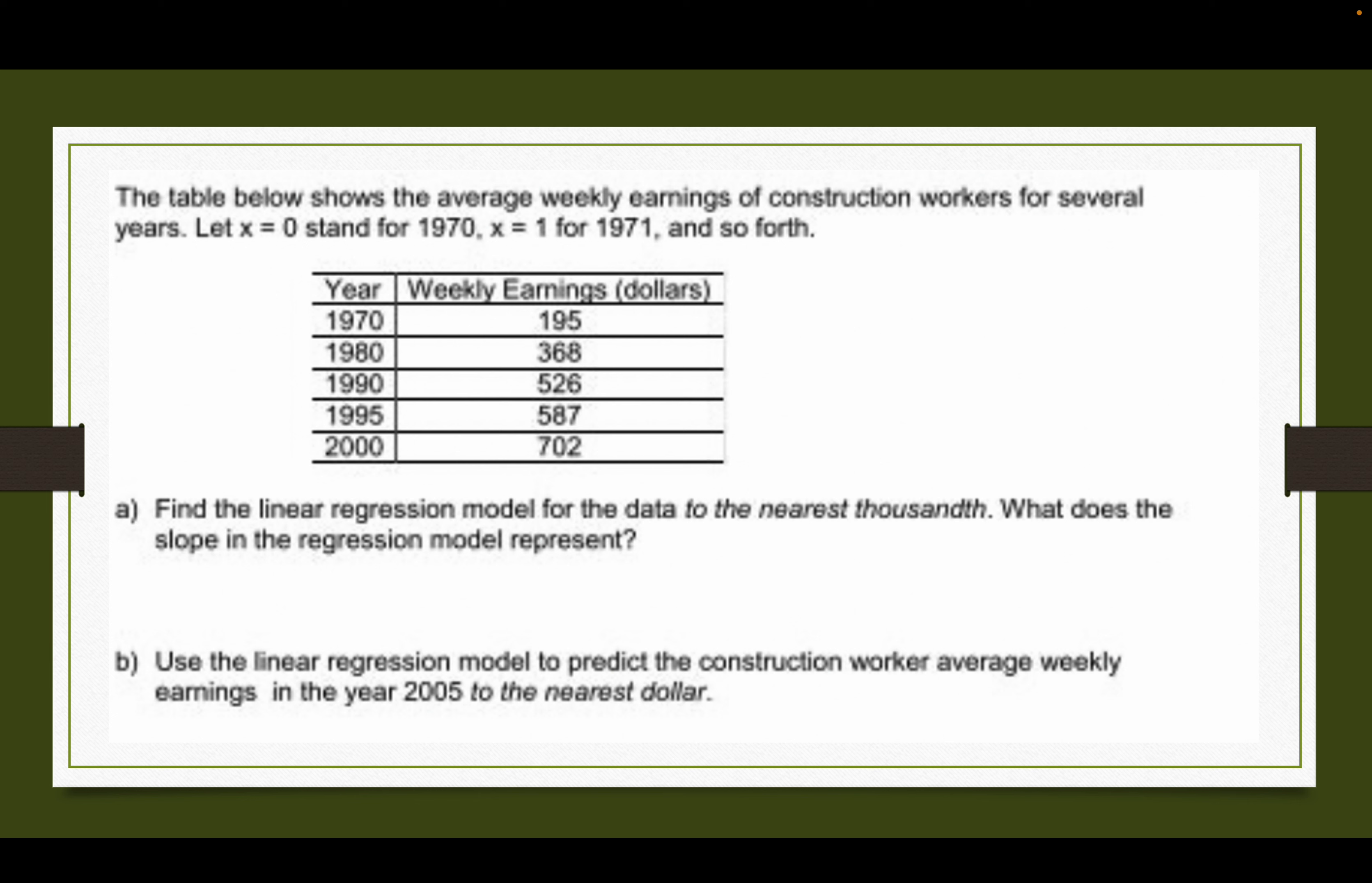All right, I plug in 1970, 1980, 1990, 1995, and 2000 into L1. 195, 368, 526, 587, 702 into L2. Then I do STAT CALC, I go to the fourth choice down and it'll tell me a is 16.395, because it wants nearest thousandth, and b is 32,100.922.